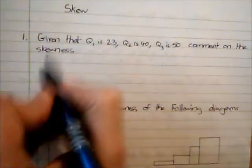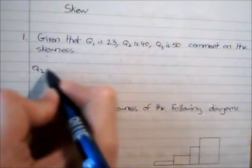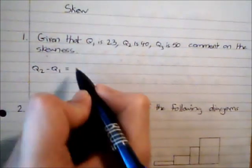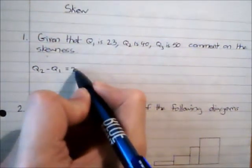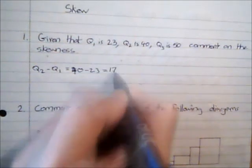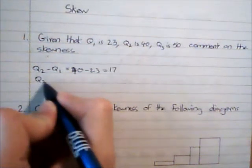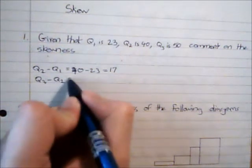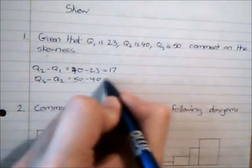So I'm going to do Q2 minus Q1, so that's going to be 40 minus 23 which is 17. And I'm going to do Q3 minus Q2, so 50 minus 40 is 10.